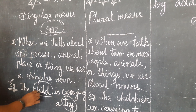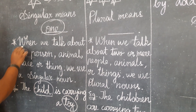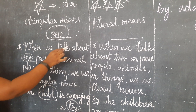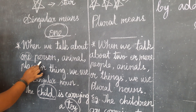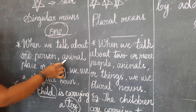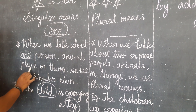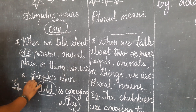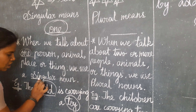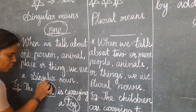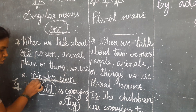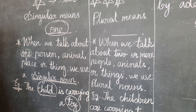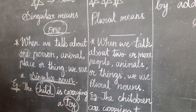Are you clear, children? Once again I will repeat. When we talk about one person, animal, place or thing, we use a singular noun. Okay children. Now let's see plural.